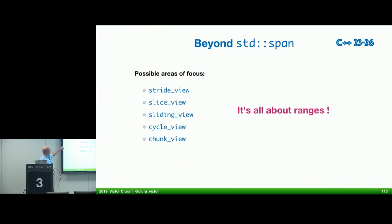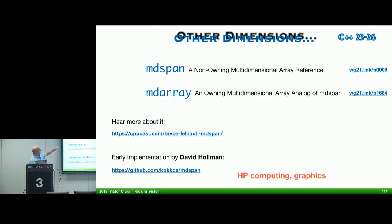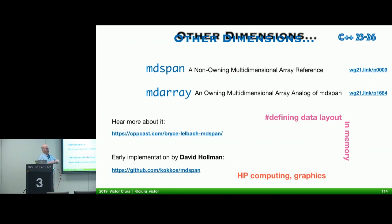Beyond span: possible areas of interest in ranges — stride view, slice view, sliding view, cycle view, chunk view — things similar to Go slices, which I would much prefer over just a simple wrapper around a pointer and length. Further out, there are proposals for multi-dimensional span and multi-dimensional array — one owning, one non-owning. There's an early implementation for mdspan already available. It's all about defining data layout in memory, how you traverse it, how it's laid out for exotic architectures — very useful in high-performance computing and graphics.